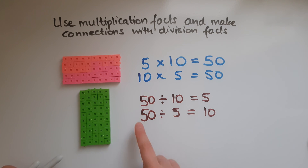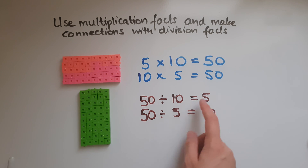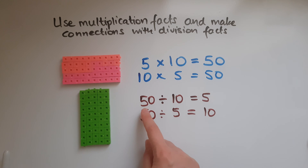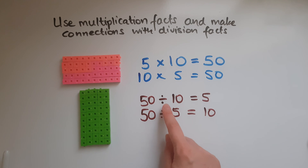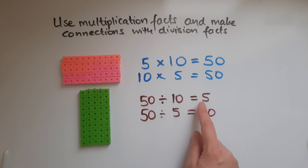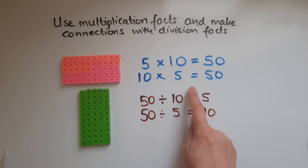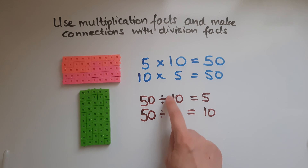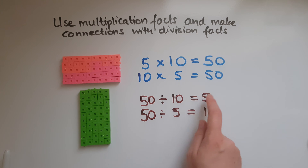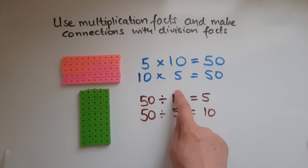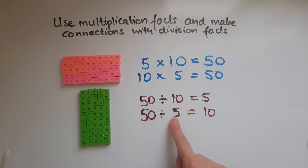We know that multiplication is the opposite of division. So if I reverse division, I go times instead: 5 times 10 gives me 50, and 10 times 5 equals 50. These four related facts show how multiplication and division are connected.